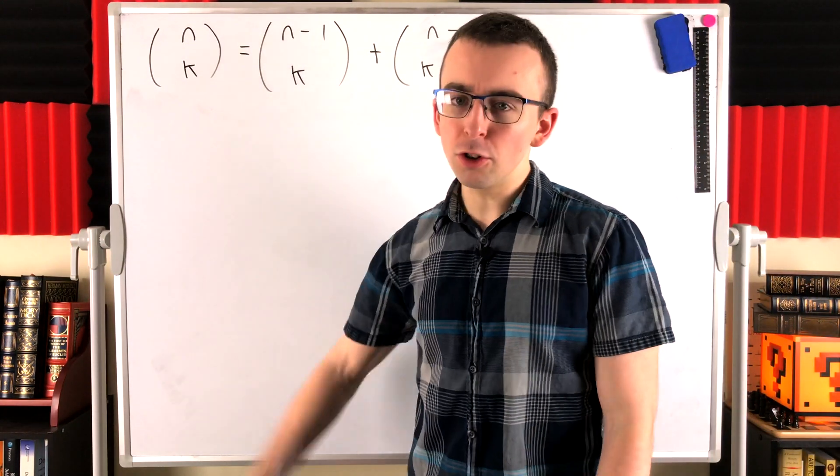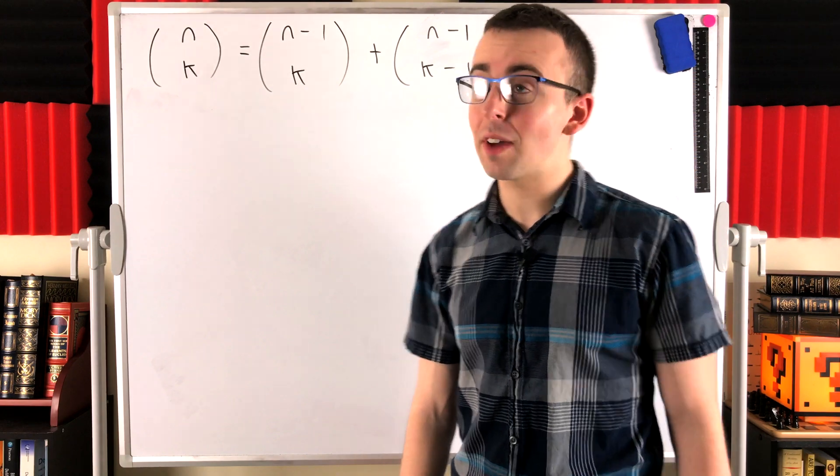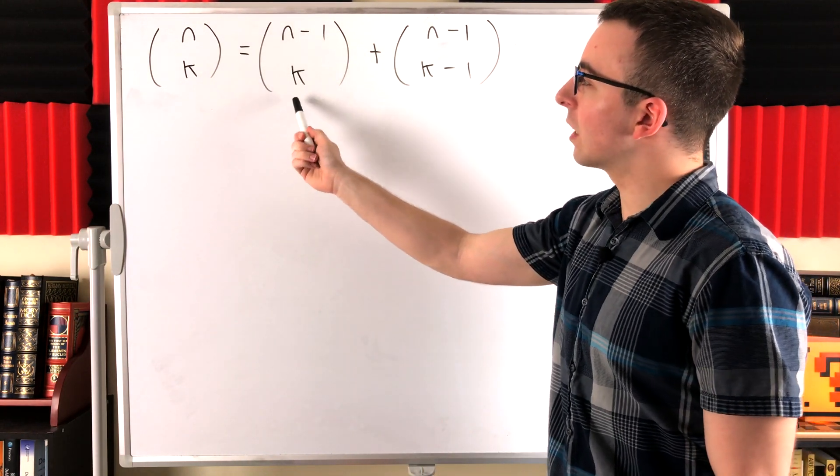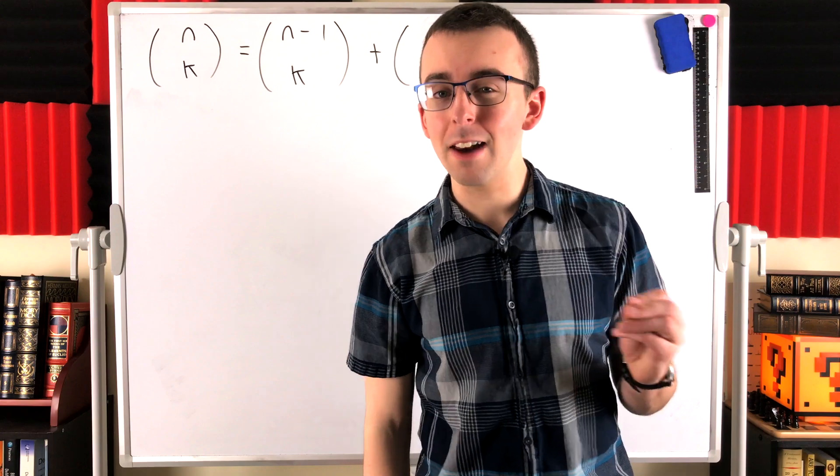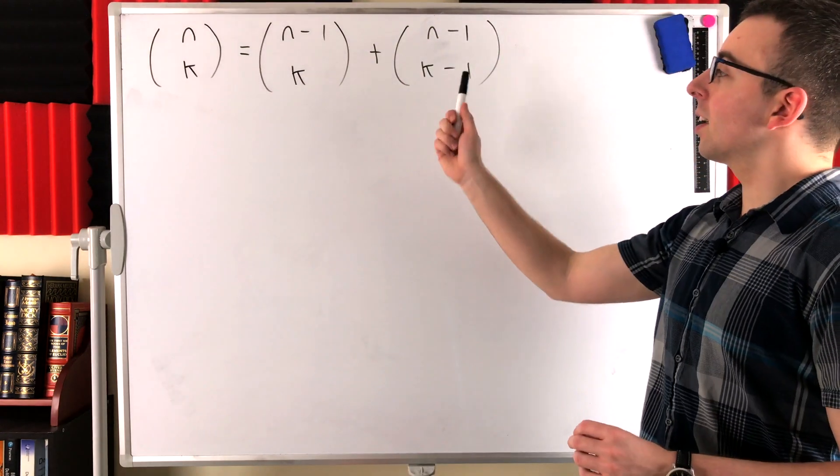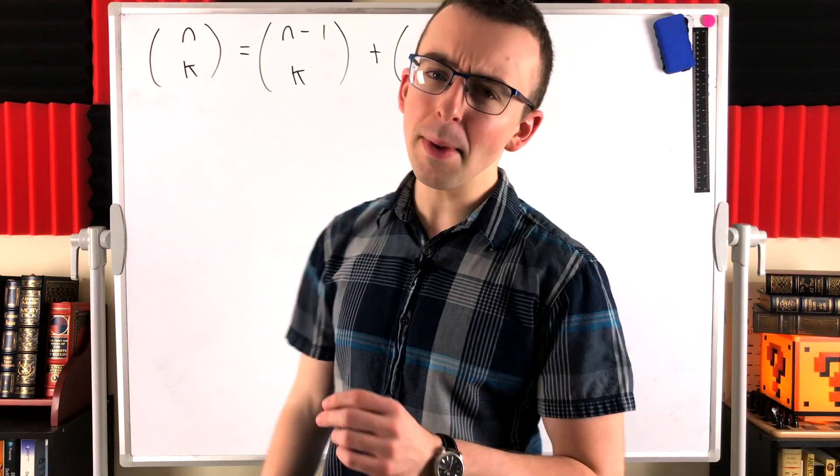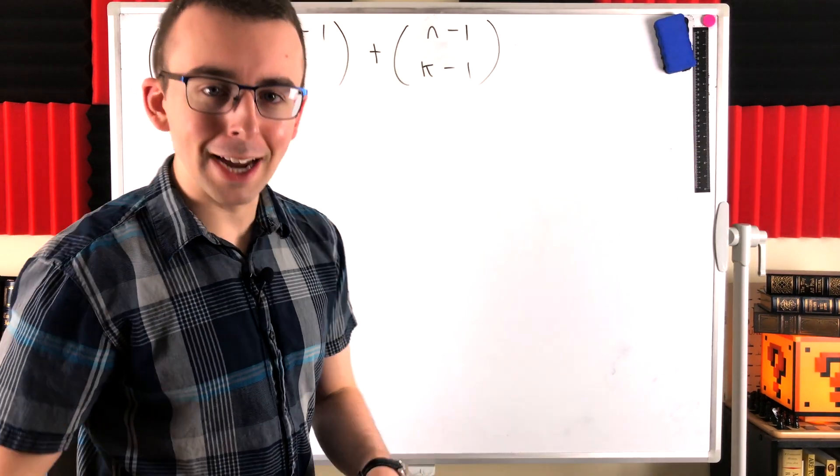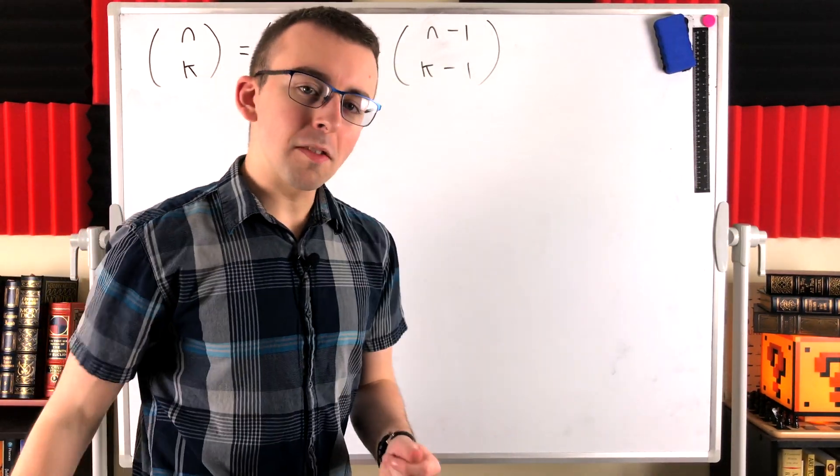The number of ways we can choose k objects from a collection of n objects is equal to the number of ways we can choose k objects from a collection of n minus 1 objects plus the number of ways we can choose k minus 1 objects from a collection of n minus 1 objects.